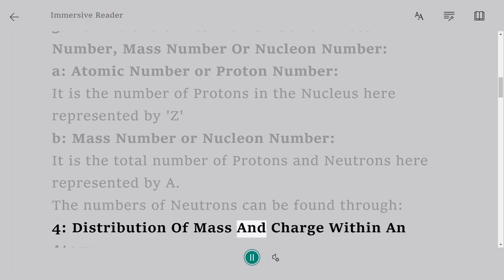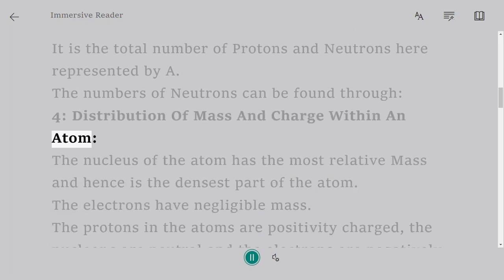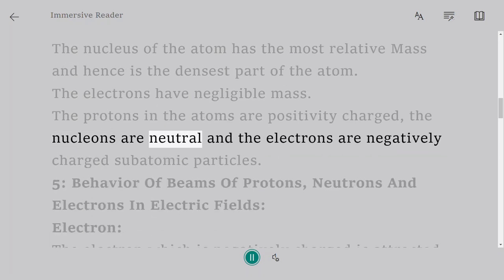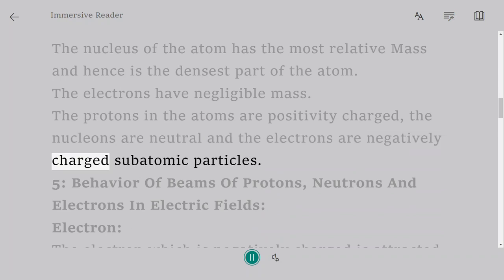4. Distribution of Mass and Charge Within an Atom. The nucleus of the atom has the most relative mass and hence is the densest part of the atom. The electrons have negligible mass. The protons in the atoms are positively charged, the nucleons are neutral, and the electrons are negatively charged subatomic particles. 5.